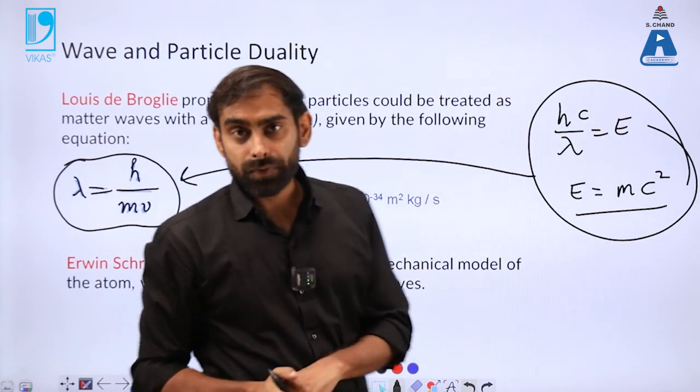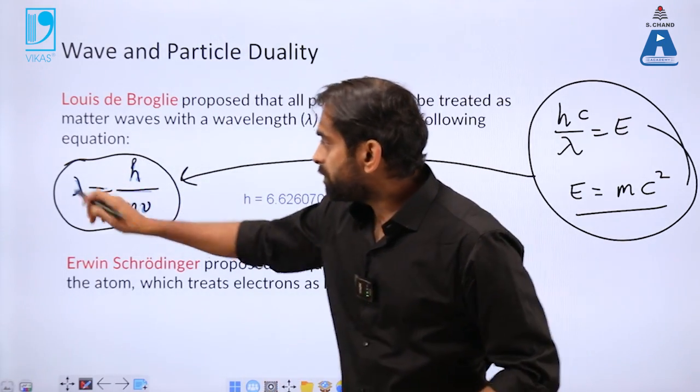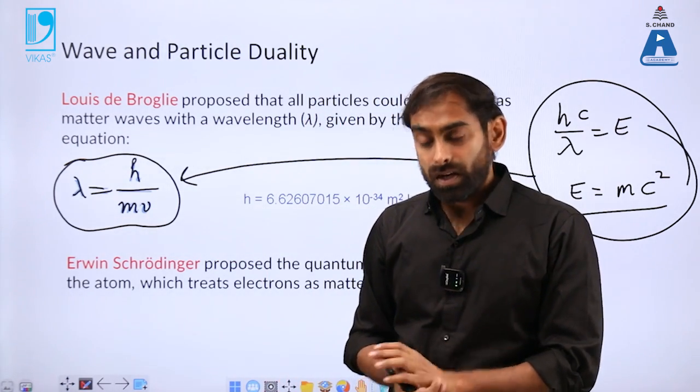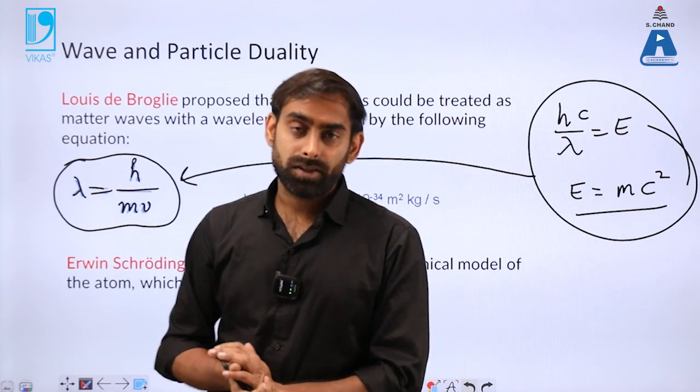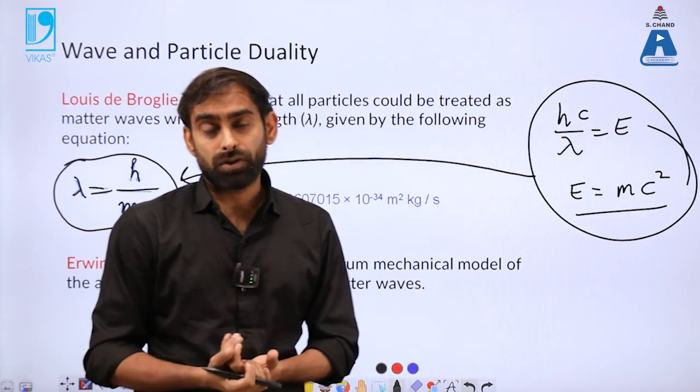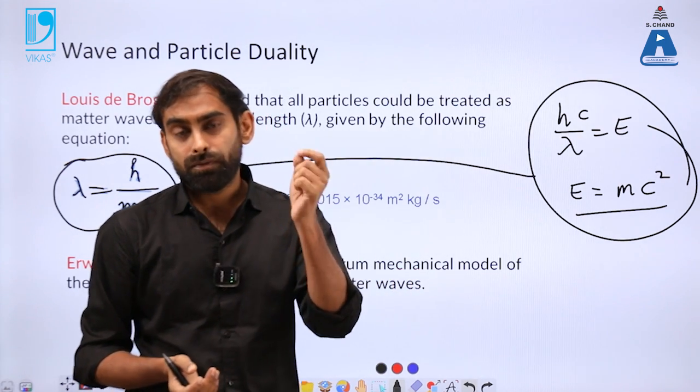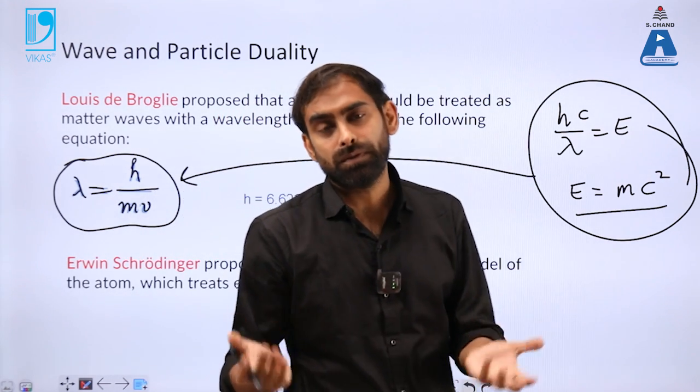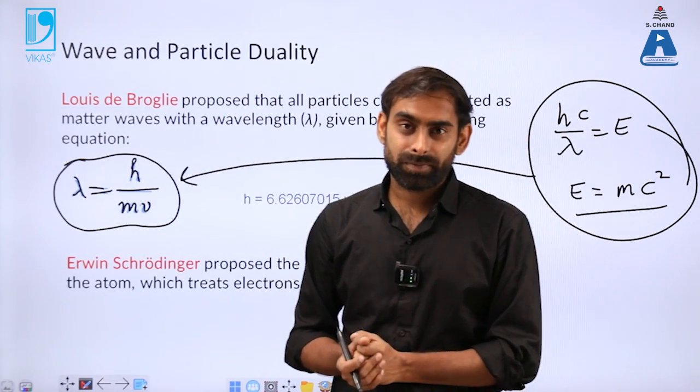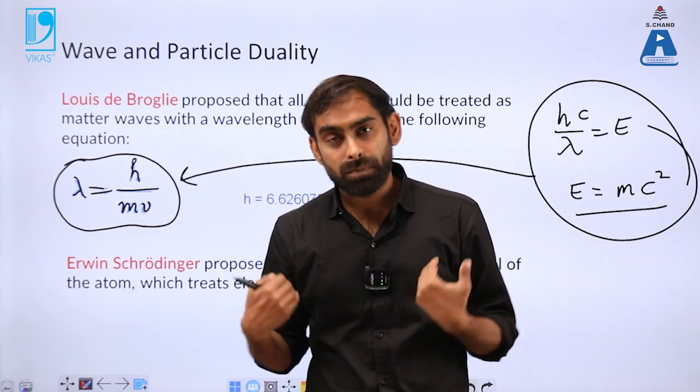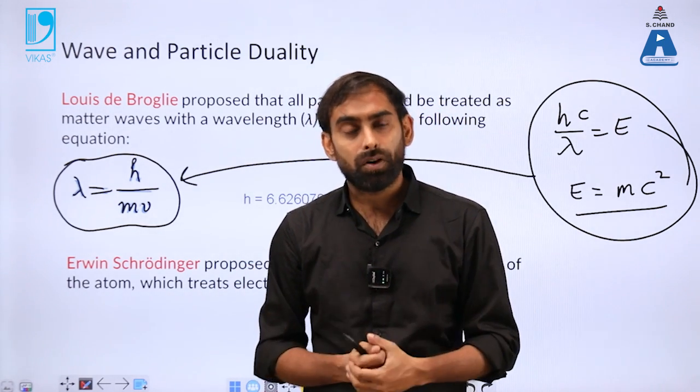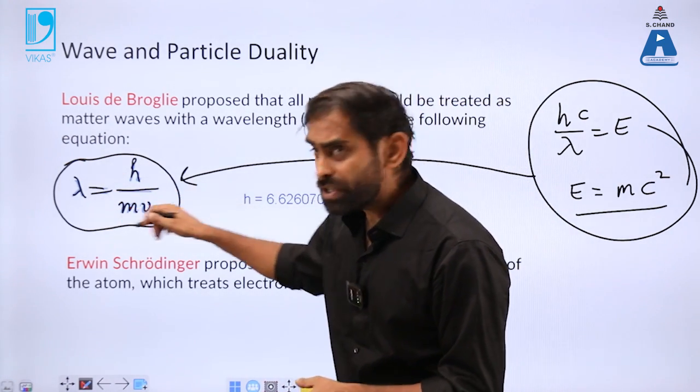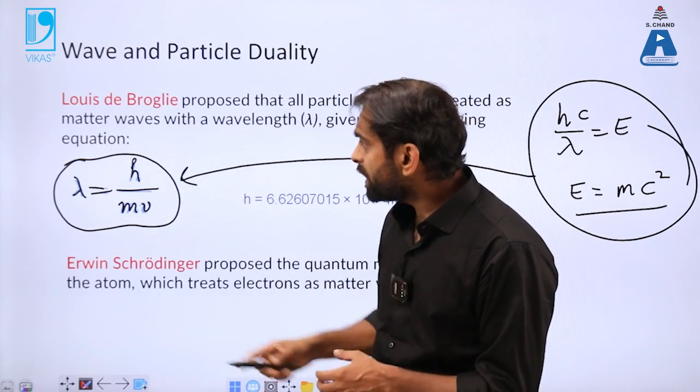If every matter has dual nature, like we also have dual nature, and a photon also has dual nature, it can behave as particle as well as wave, so why don't we see waves in our day-to-day lives? The answer comes from this equation itself, if you look at the values here.